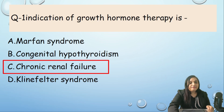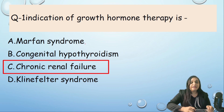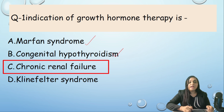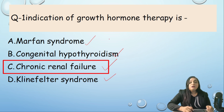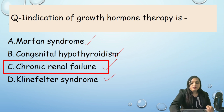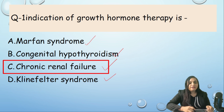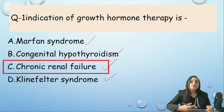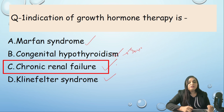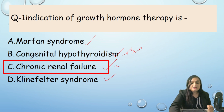MCQ 1 — Indication for growth hormone therapy: (A) Marfan syndrome, (B) Congenital hypothyroidism, (C) Chronic renal failure, (D) Klinefelter syndrome. Answer: (C) Chronic renal failure. In Marfan and Klinefelter syndromes, growth hormone has no role; in congenital hypothyroidism, we supplement with thyroxine, not GH.